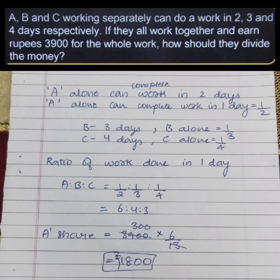We would multiply the ratios by 12. 1 upon 2 multiplied by 12 would be 6 and similarly for the others.